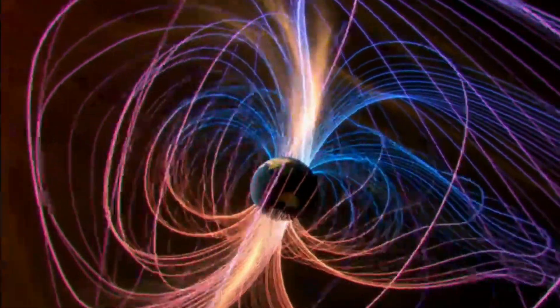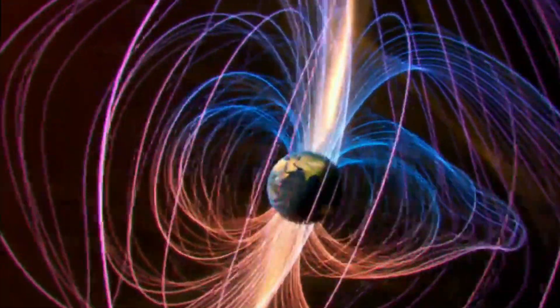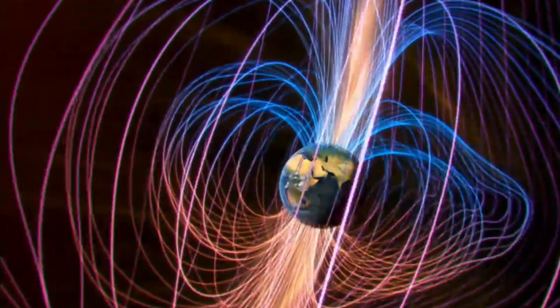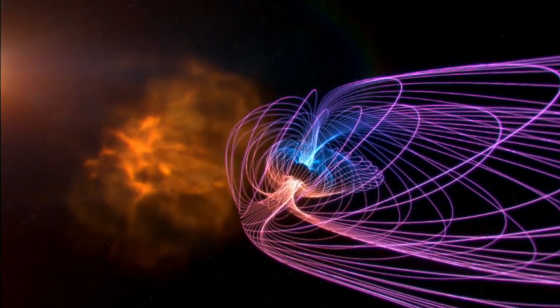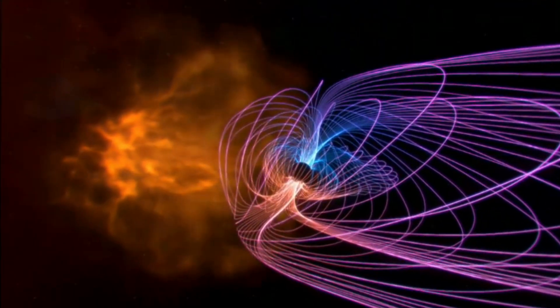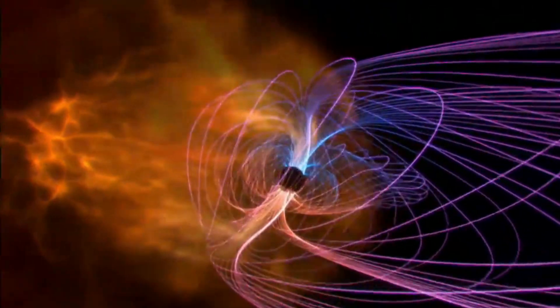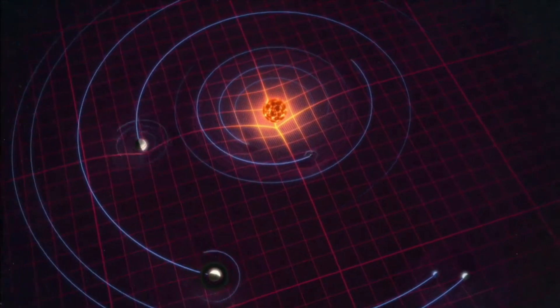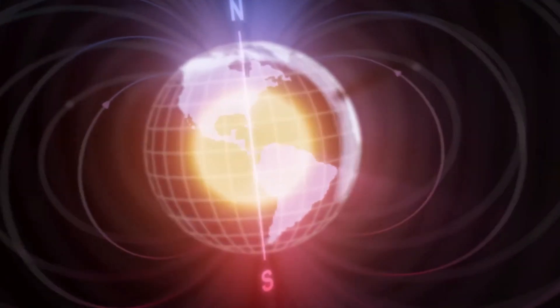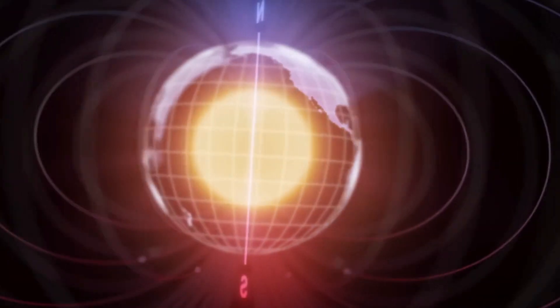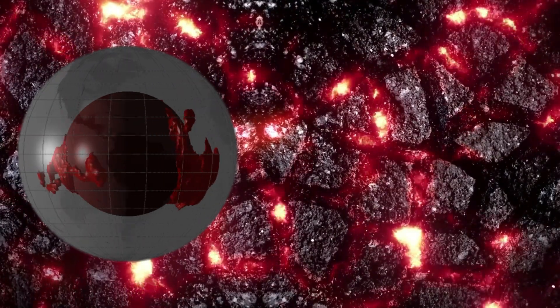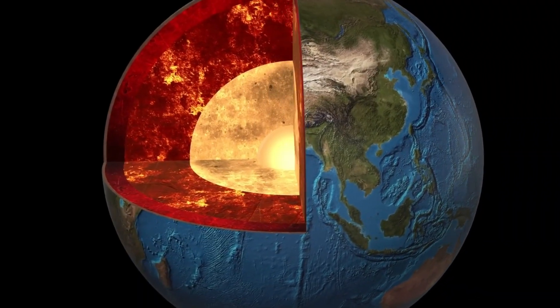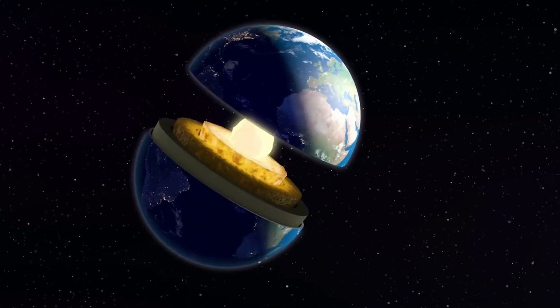One of the most intriguing aspects of these discoveries is their potential connection to Earth's magnetic field. The planet's magnetic field is generated by the movement of molten iron within the outer core, which creates a dynamo effect. This magnetic field acts as a protective shield, deflecting harmful solar radiation and making life on Earth possible. Researchers are now speculating that these anomalies, particularly the LLSVPs, could be influencing the flow of molten materials in the outer core.